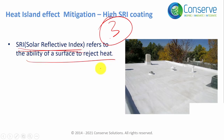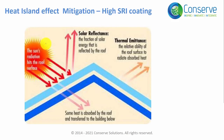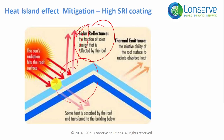To understand SRI, consider what happens when solar radiation falls on a surface. A portion is reflected — called solar reflectance — and the reflected radiation goes directly into space. The remaining solar radiation is absorbed by the material. Of the absorbed portion, some is emitted back into the atmosphere as heat waves, called thermal emittance, and a portion is transmitted inside the space.